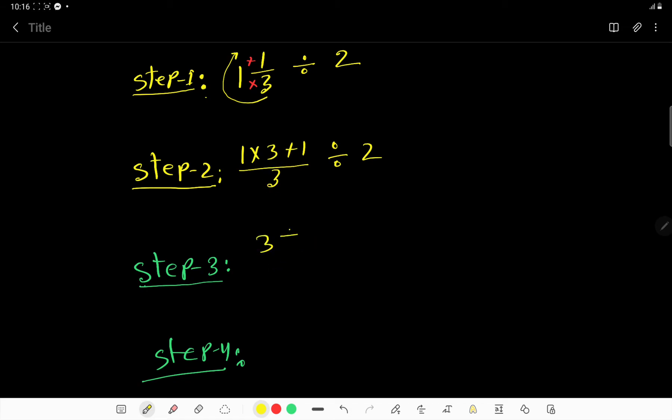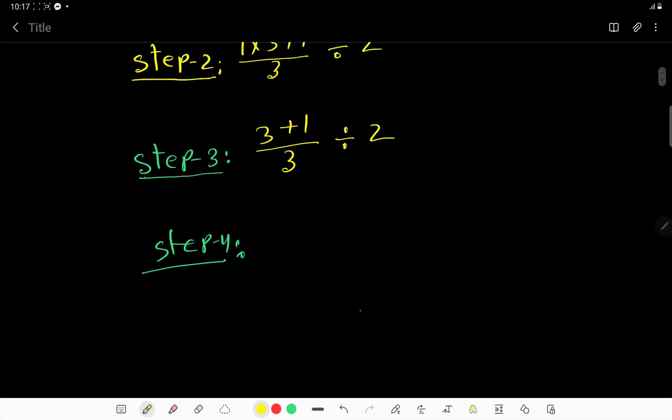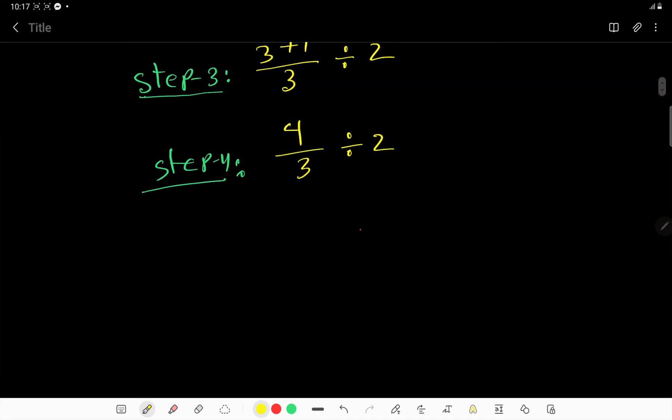Three plus one, divided by three, division sign two. Then four over three divided by two. Now this is a fraction.